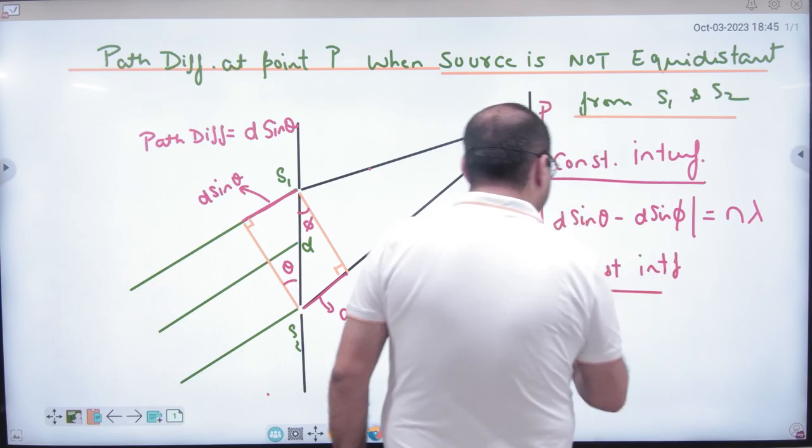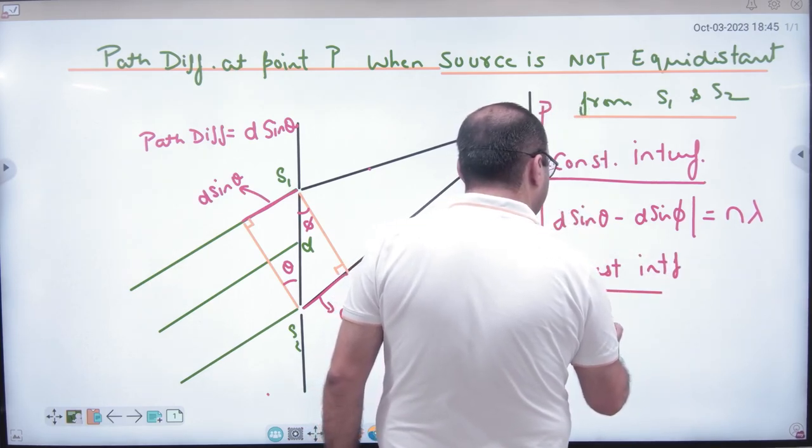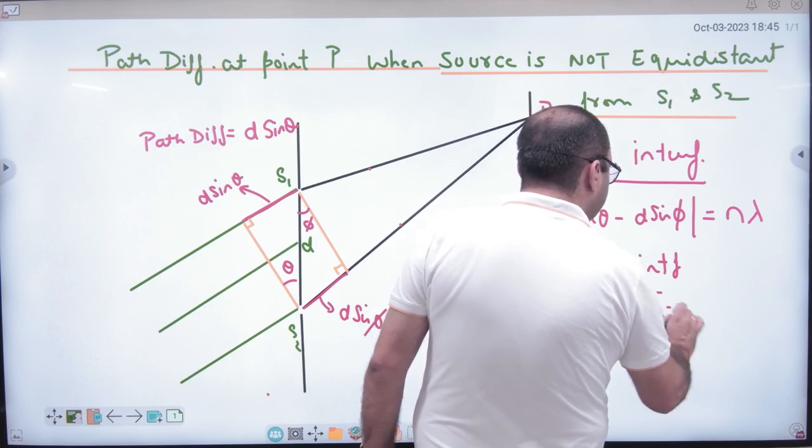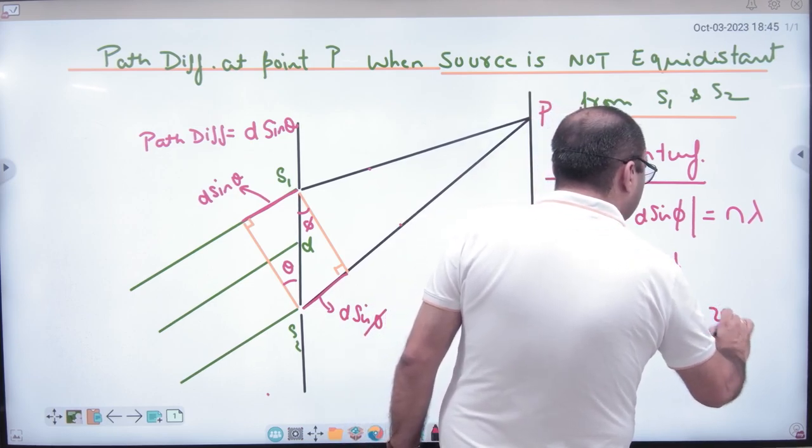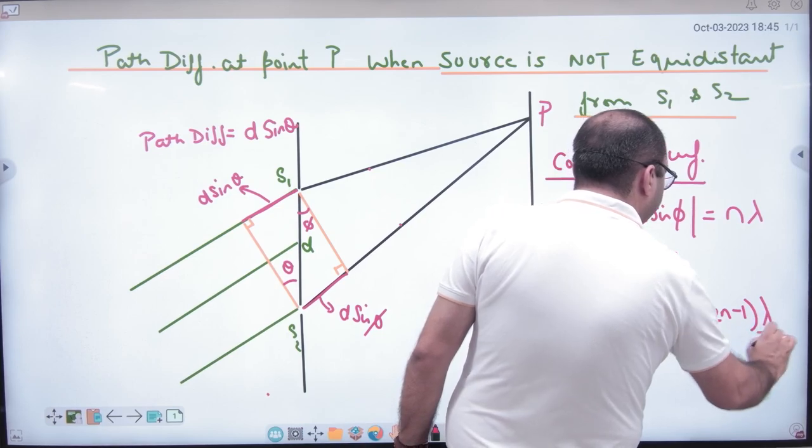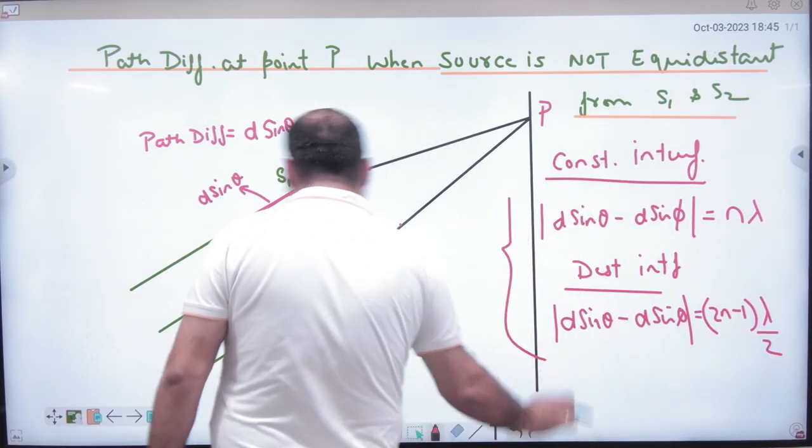And destructive interference. Destructive interference, this, which path difference will be, what should it come? 2n minus 1 into lambda by 2. Which interference is? Destructive.